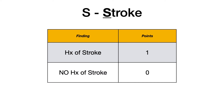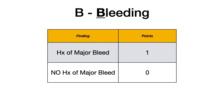S stands for stroke — pretty simple. If the patient has a history of stroke, they get a point; if no history of stroke, zero points. B stands for bleeding. If they have a history of a major bleed, they get one point; if no history, zero points. Again, major bleed is defined as intracranial hemorrhage, a hemoglobin drop greater than 2, the need for hospitalization, or the need for transfusion.